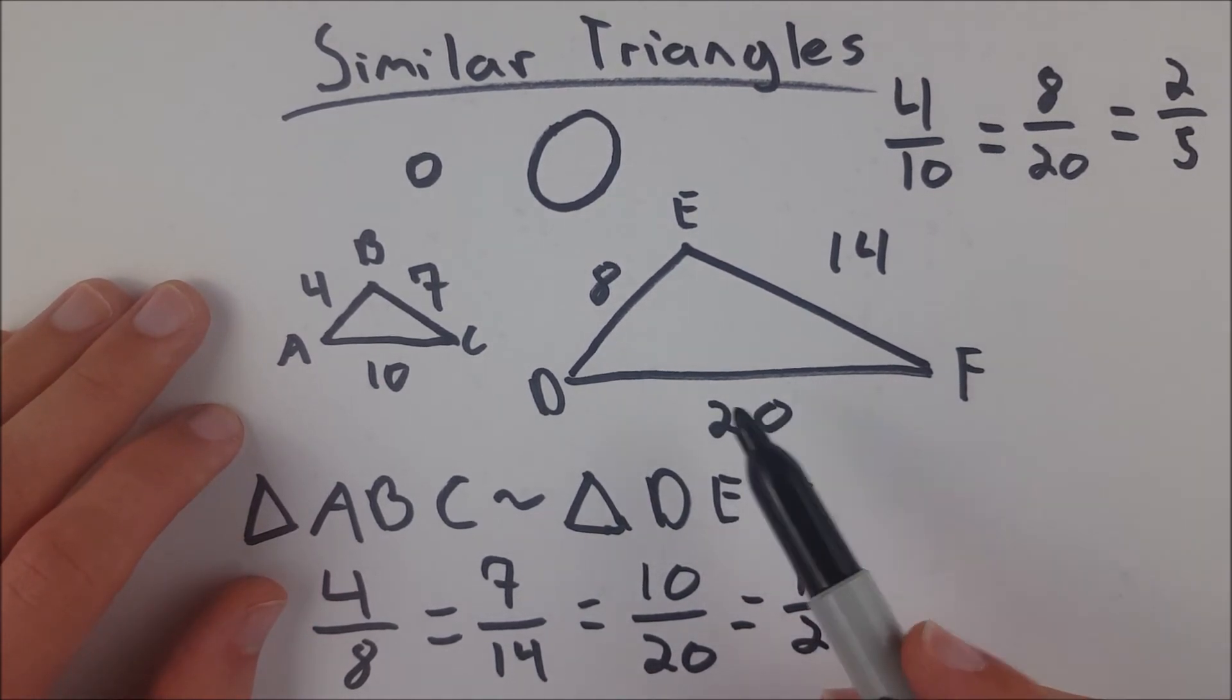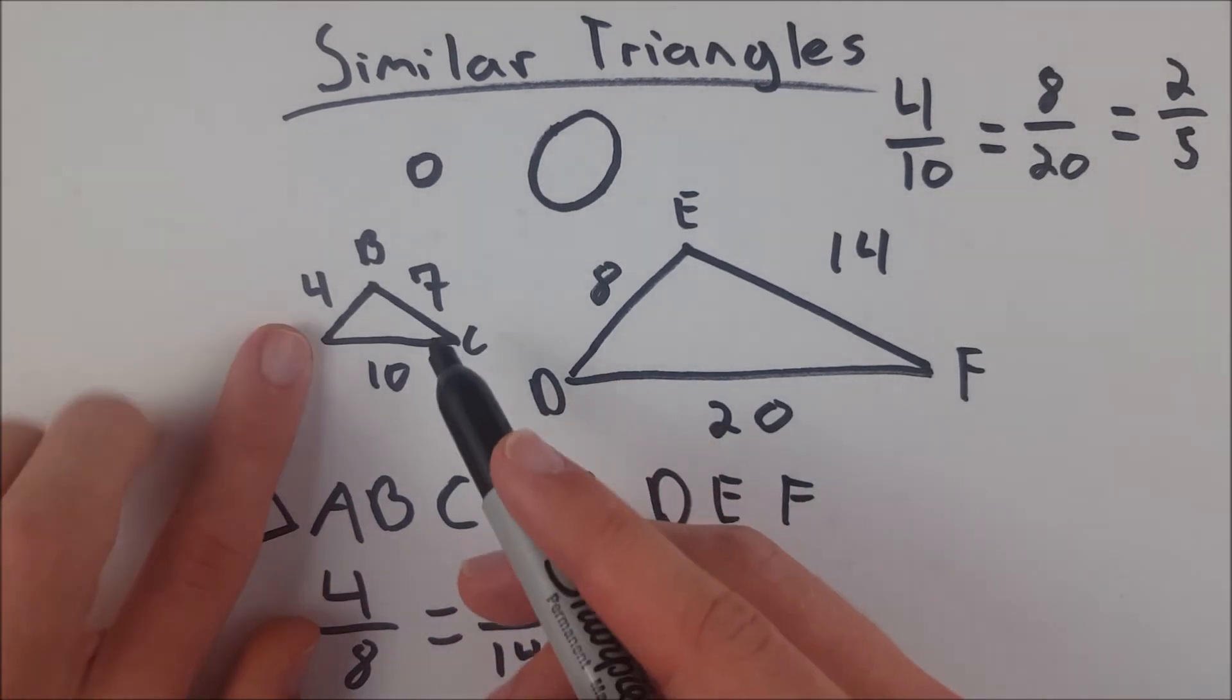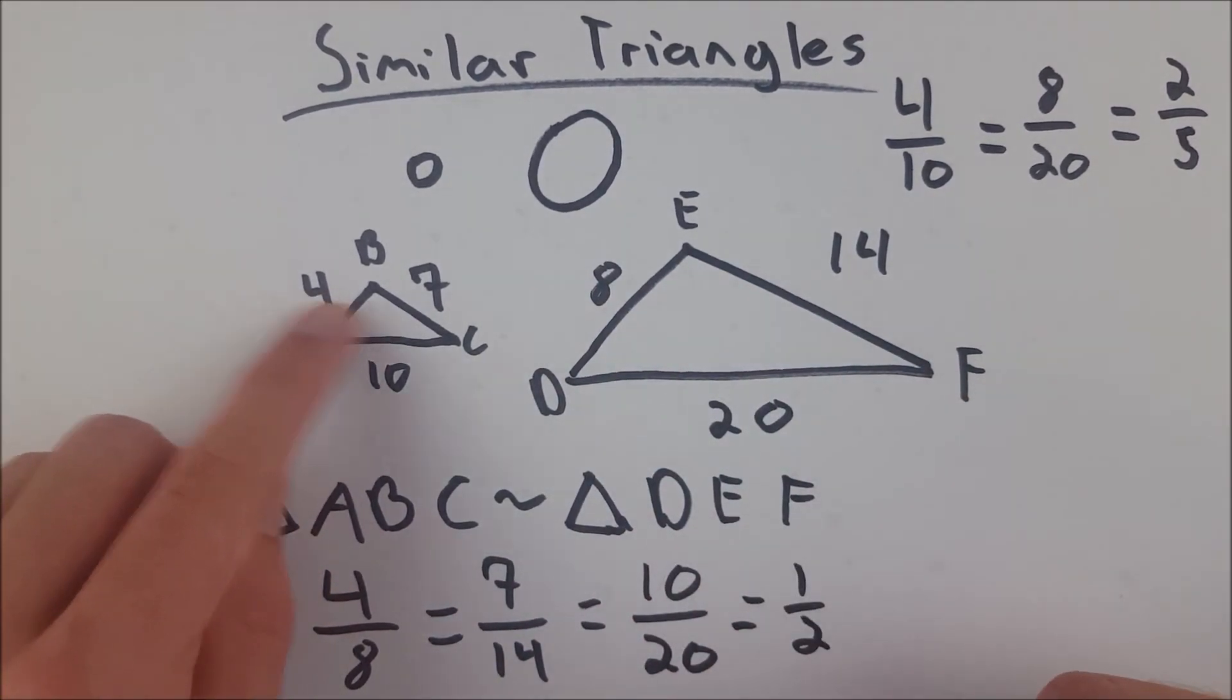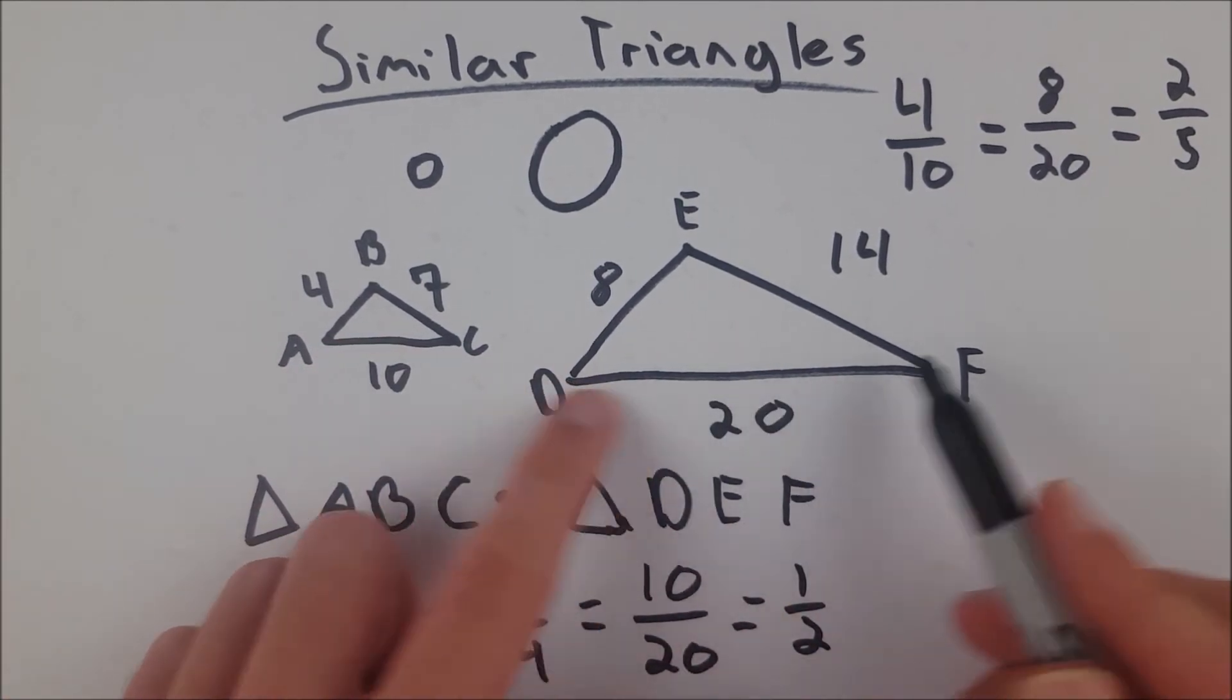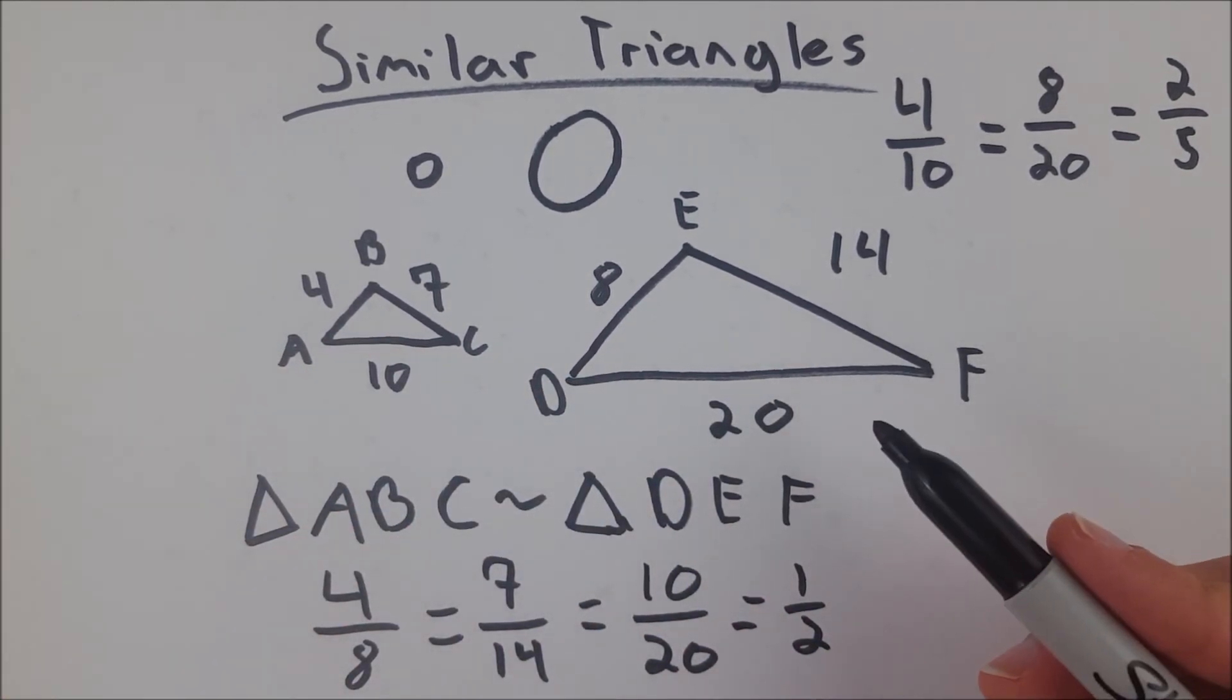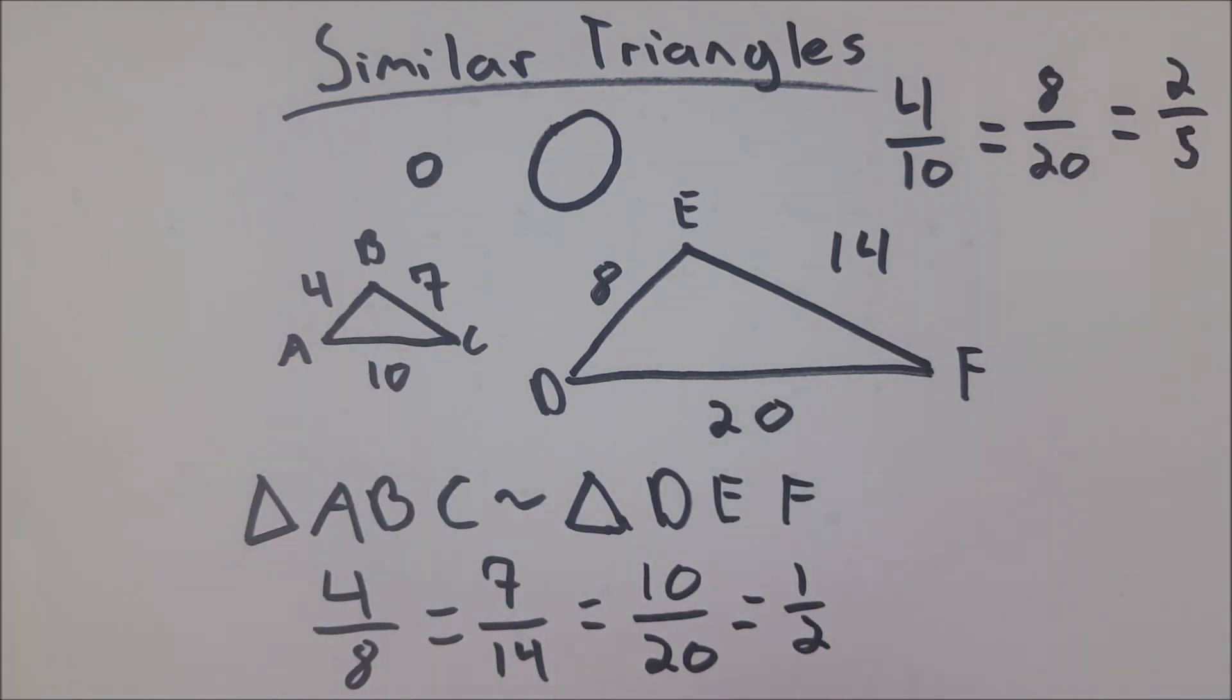Similar triangles can be congruent triangles. For example, if this triangle had side lengths 8, 14, and 20, it would be congruent and similar to this triangle over here. But similar triangles don't always have to be congruent.